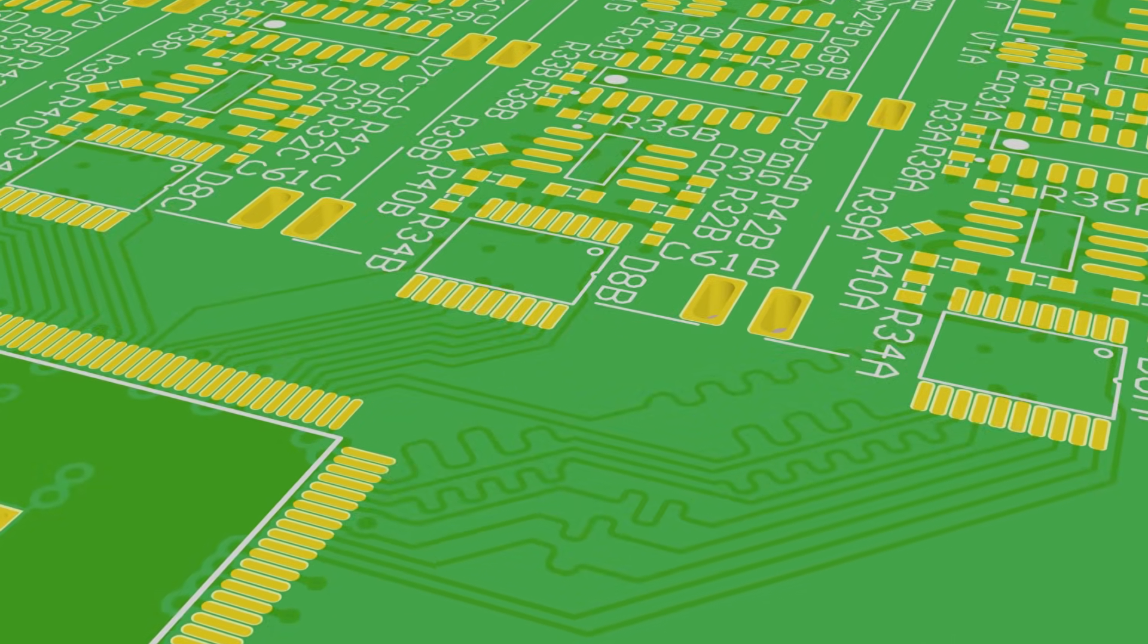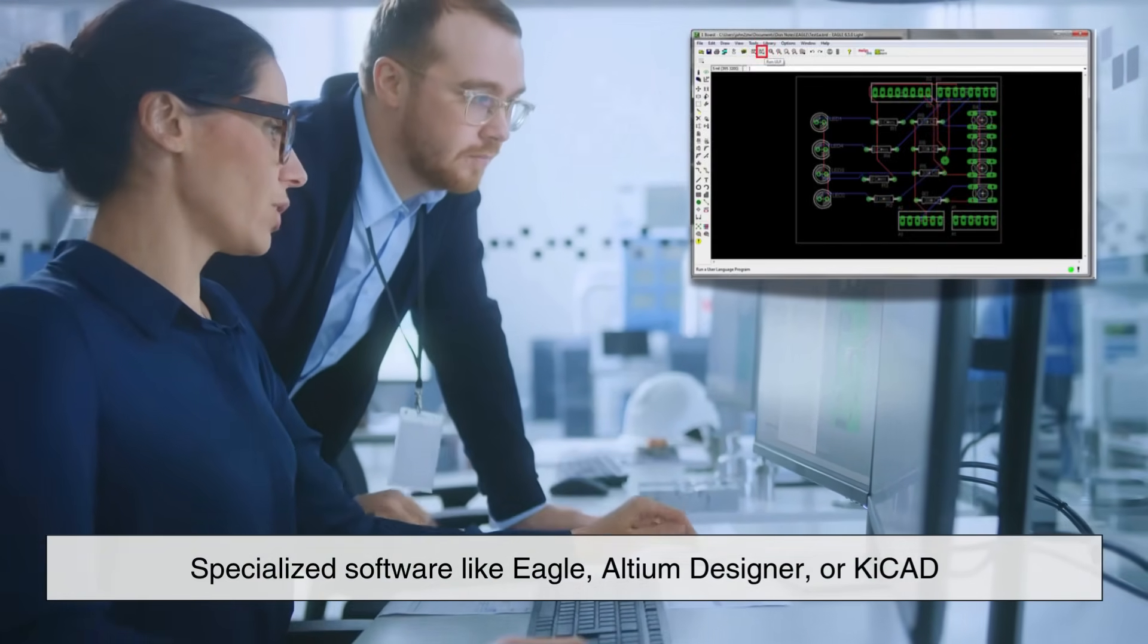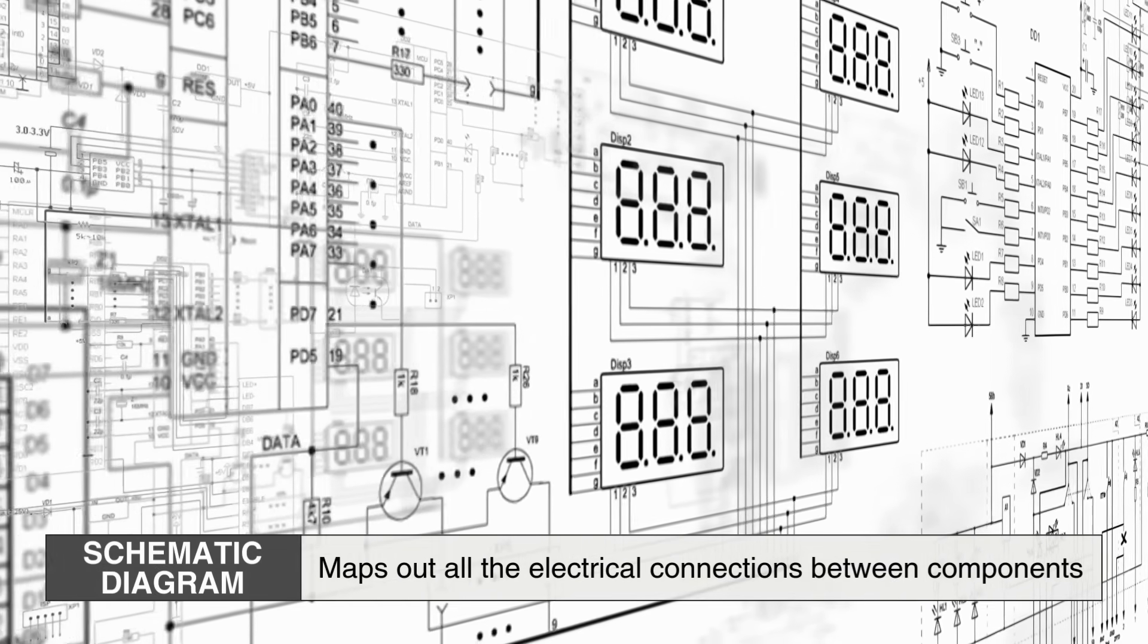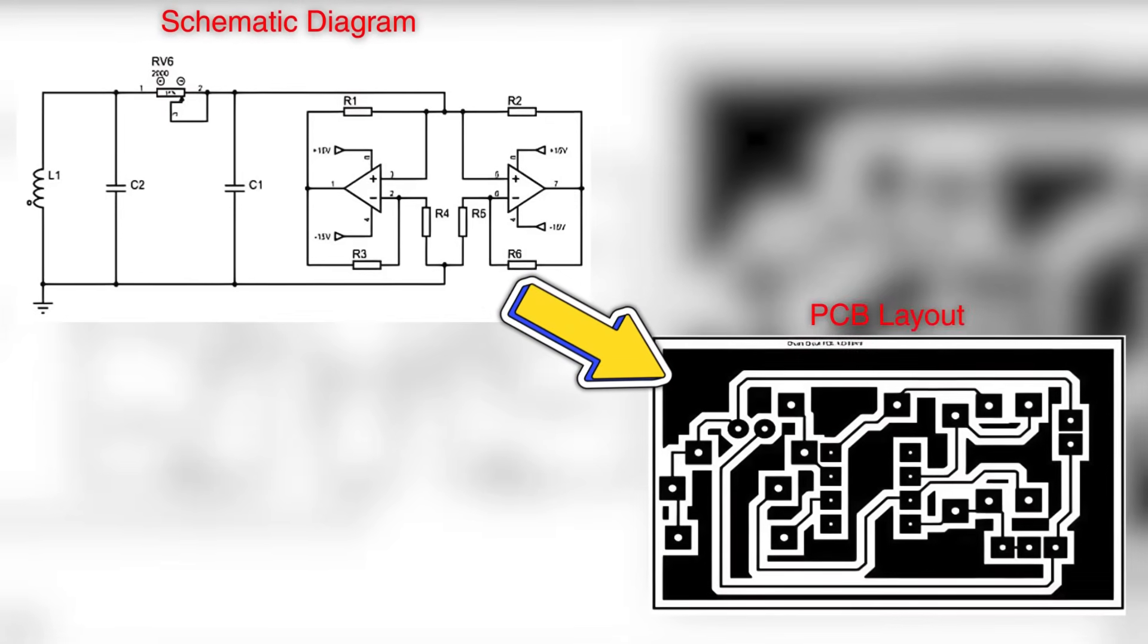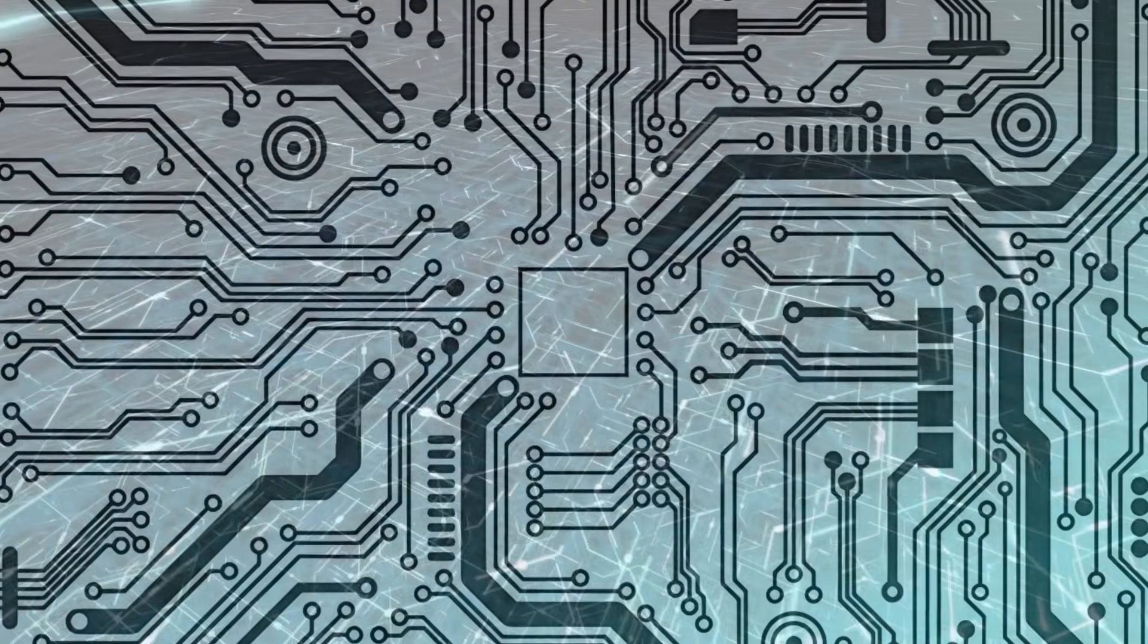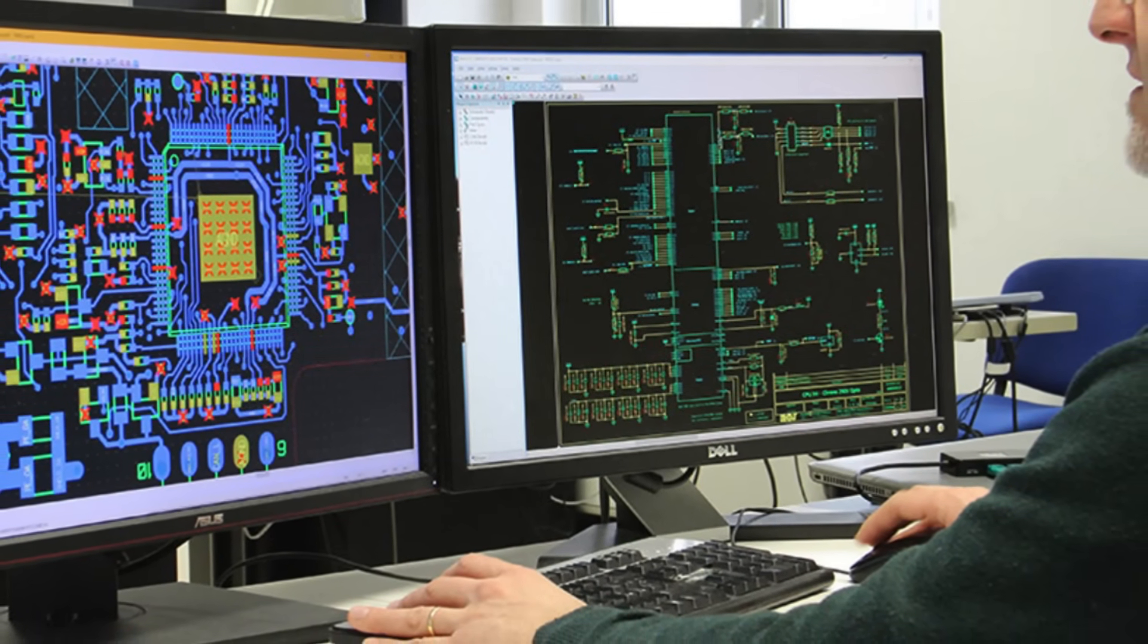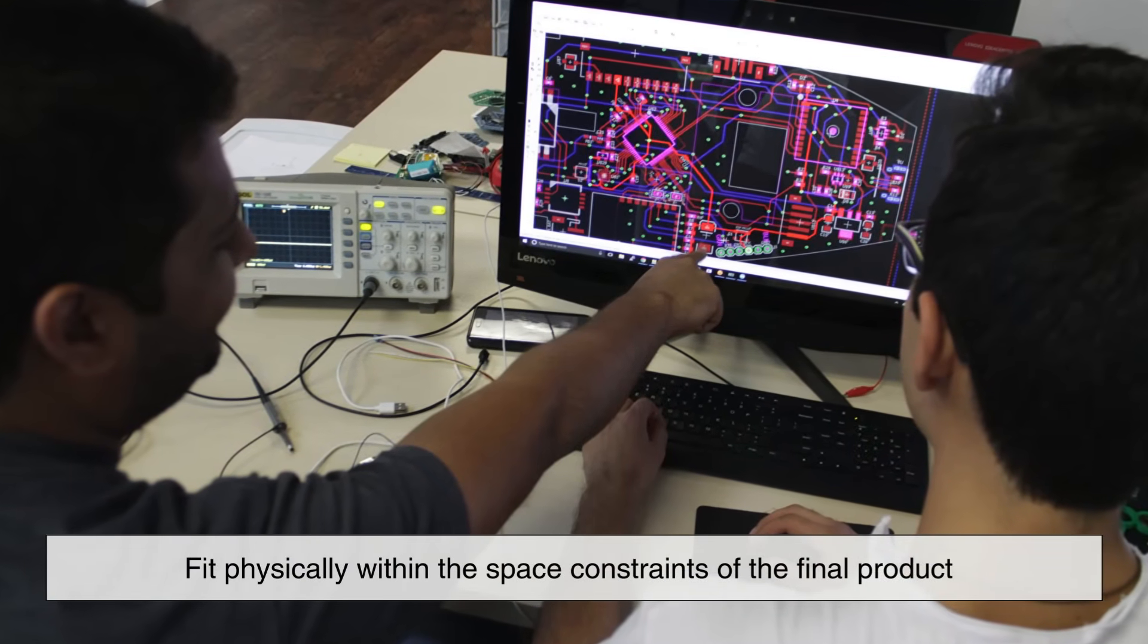Everything begins with a design. Engineers and PCB designers use specialized software like Eagle, Altium Designer, or KiCAD to lay out the blueprint for the board. This involves creating a schematic diagram, which maps out all the electrical connections between components. Once the schematic is finalized, it's translated into a PCB layout. This layout determines exactly where each trace, pad, hole, and component will go on the board. The designer must ensure that not only do all the connections make sense electrically, but that they also fit physically within the space constraints of the final product.